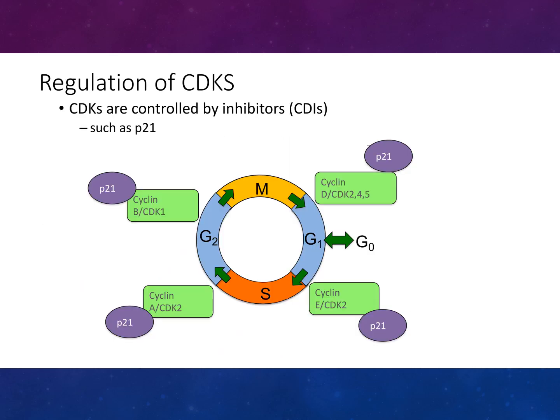Cyclins are regulated by cyclin-dependent inhibitors such as P21. You can see the M phase, G1 phase, and S phase, and how P21 binds to different cyclins — cyclin-B, cyclin-A, cyclin-E, and cyclin-D — to control different phases of the cell cycle.